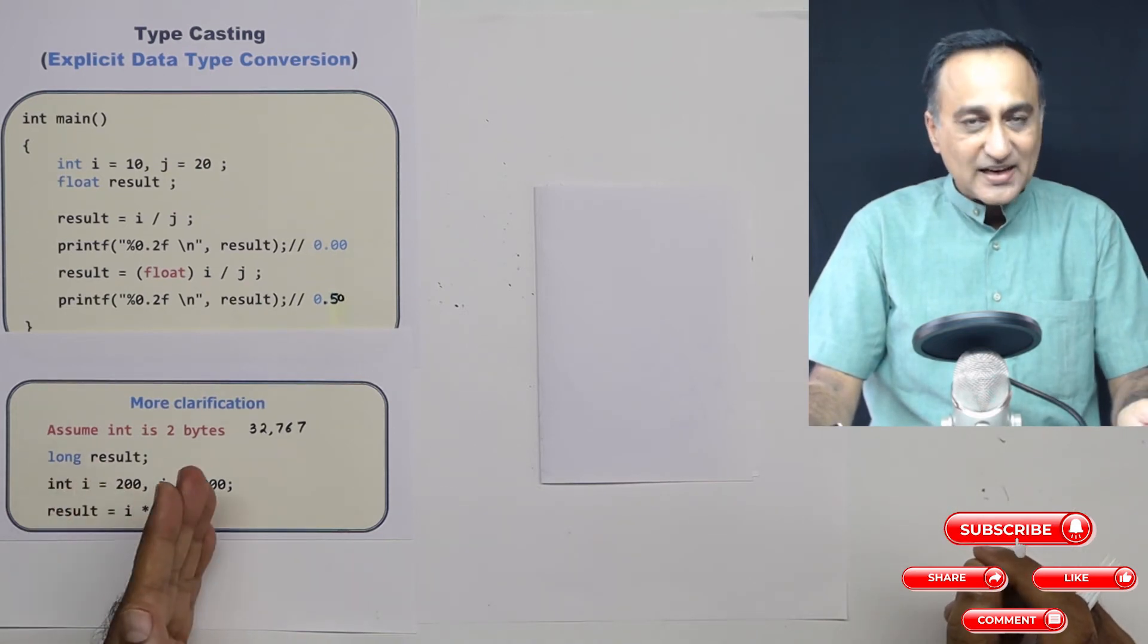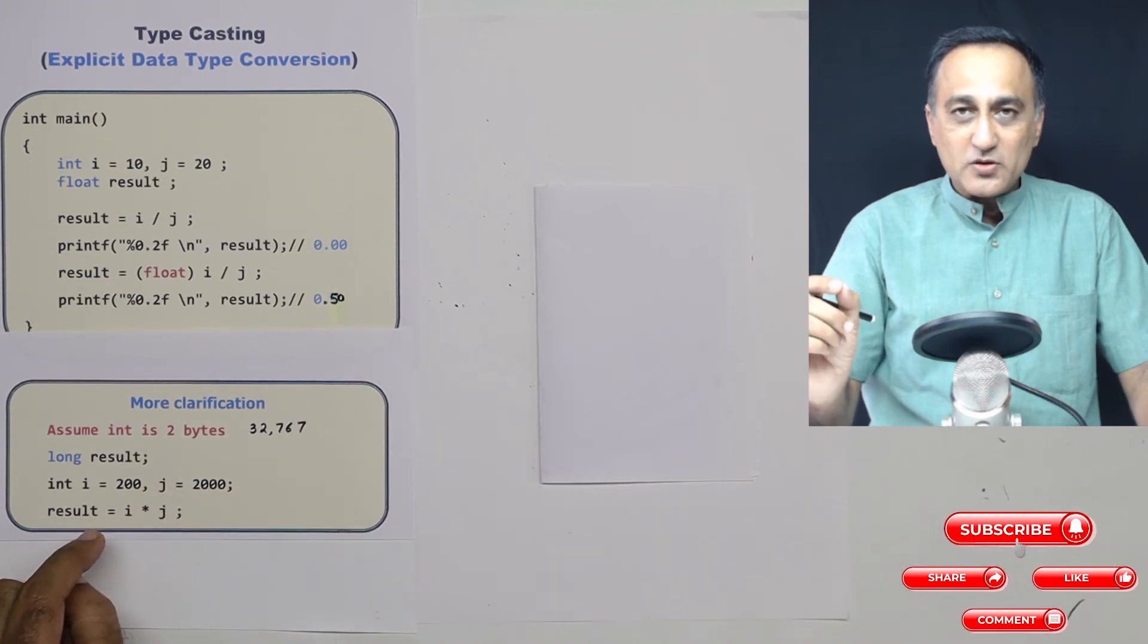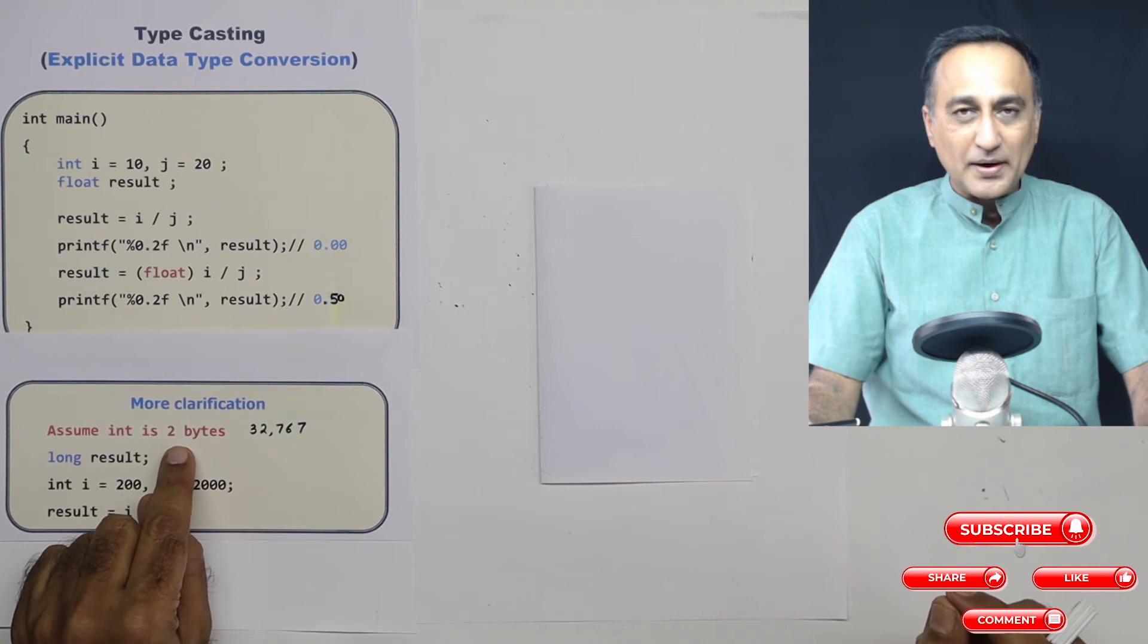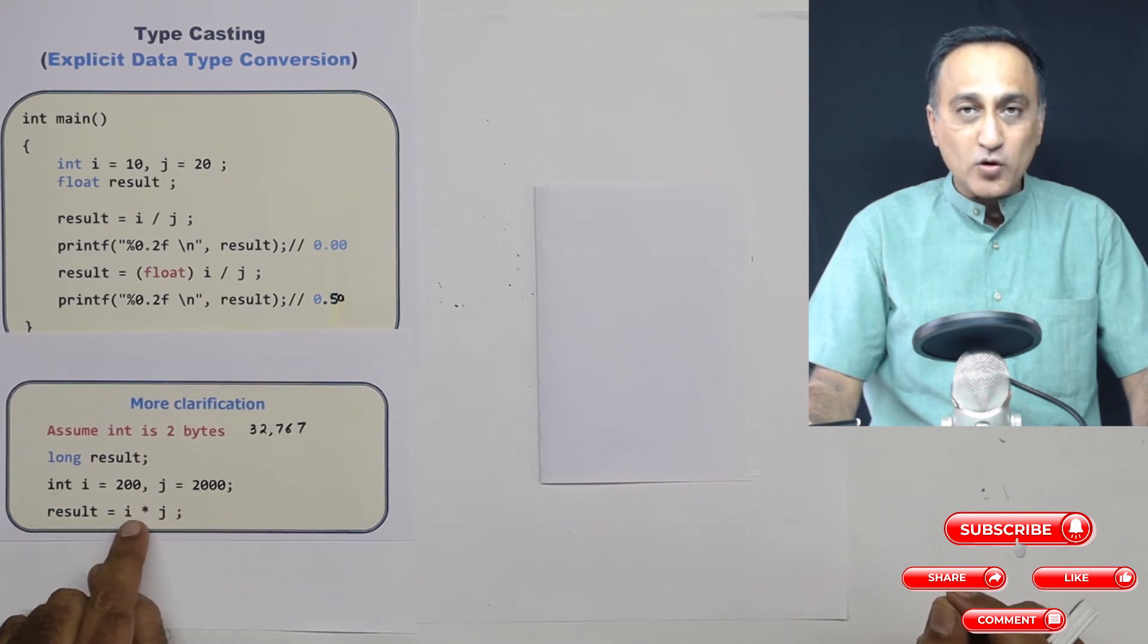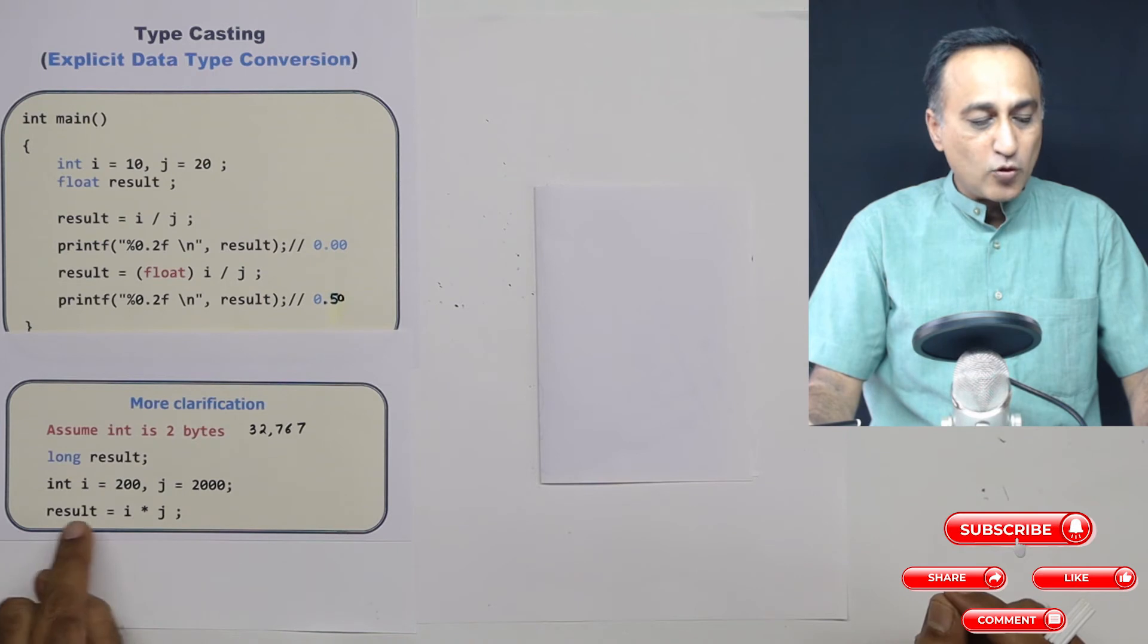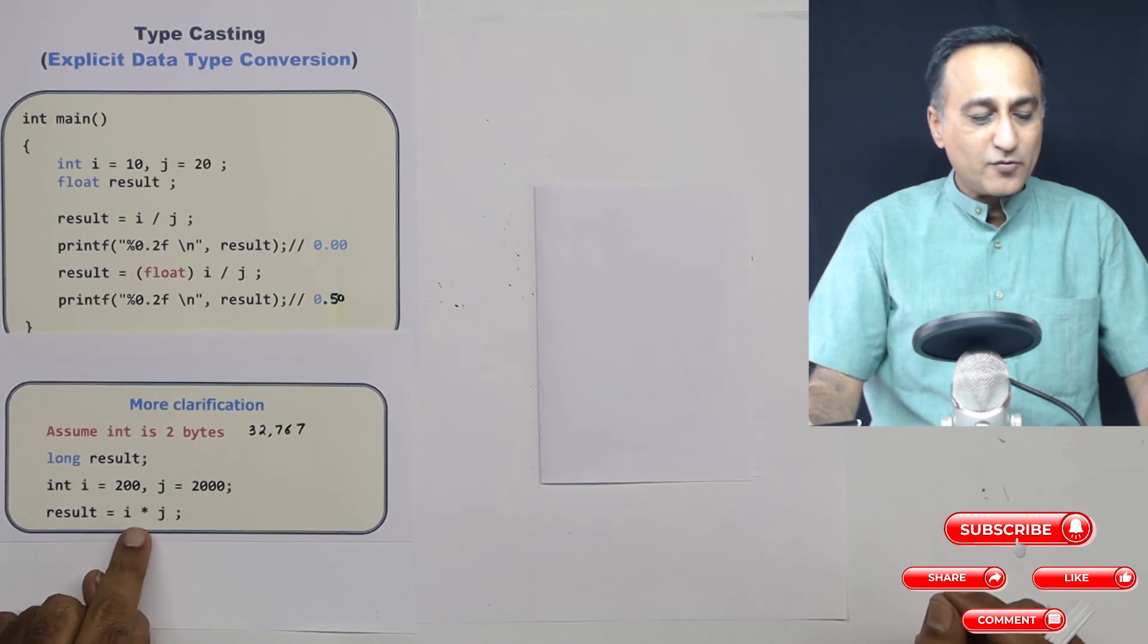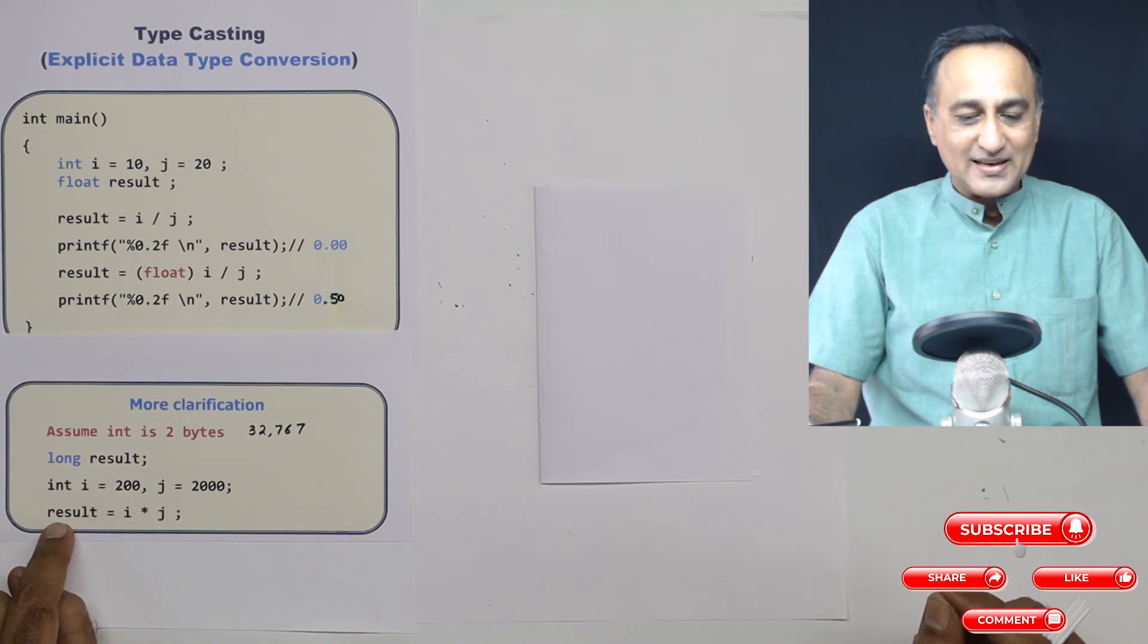But on the right side, the multiplication which occurs is between two normal integer variables whose limit is two bytes. Therefore, four lakhs is going to overflow on the right side, the overflow value is going to go to result. So this is incorrect if what you wanted was the result to be stored correctly in this variable called result.